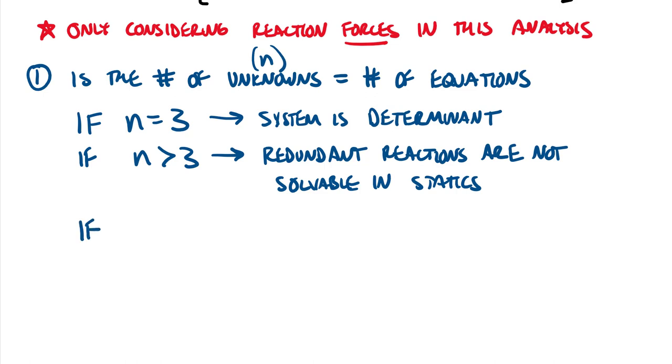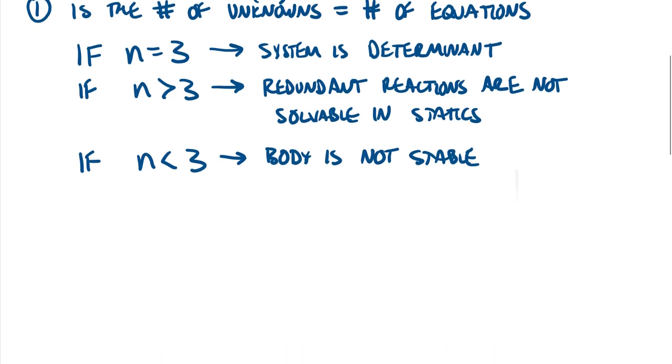And then if we have the situation where n is less than three, we'd say that the body is not stable. So this actually kind of crosses over, and I'll come back to this one after we present the rules for stability. So if you have less than three, so basically two or one reactions, they are solvable. You could get a value, but the body will not be stable.